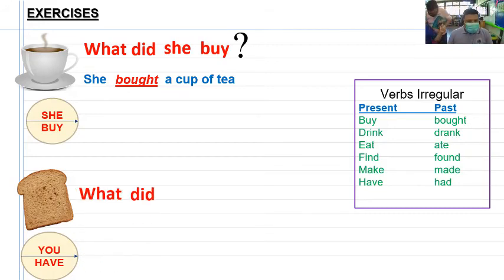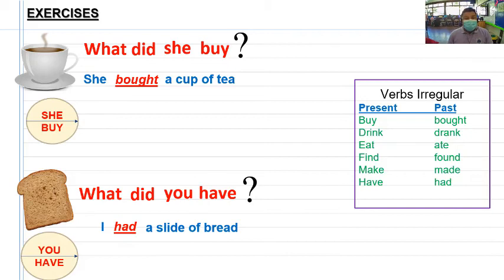Y yo respondo: I, porque you cambia a I, had. Yo tuve a slice of bread, una rebanada de pan. Bueno, este sería nuestro contenido que vamos a trabajar en esta semana: el pasado simple creando preguntas y respuestas y utilizando vocabulario de comida con unidades de medida.